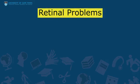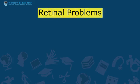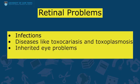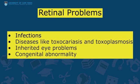Retinal problems in kids are usually due to either infection like TB, or some diseases that can be transmitted from kittens and puppies like toxocariasis and toxoplasmosis if they are not vaccinated and dewormed. Children can also inherit eye problems, and they will tell you that other family members have problems with vision too. If a retinal problem occurred during the development of the baby inside the mother's womb, we call it a congenital abnormality.